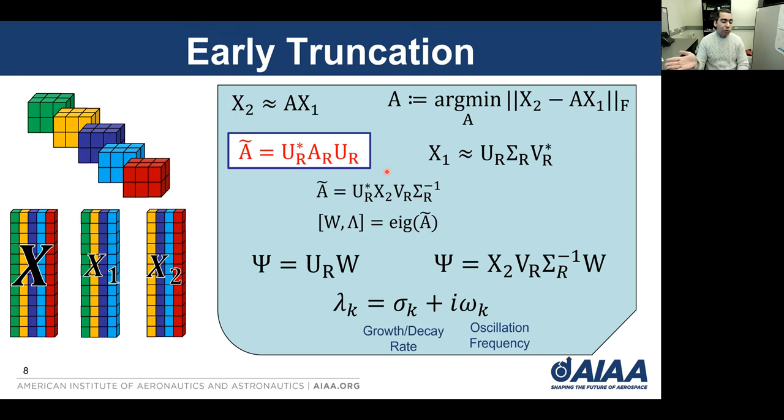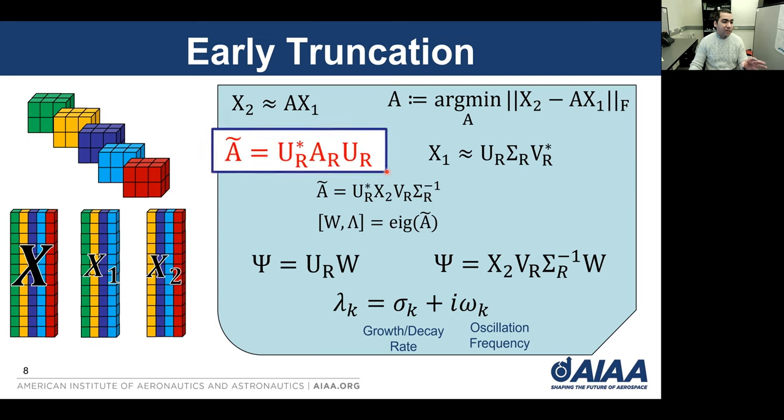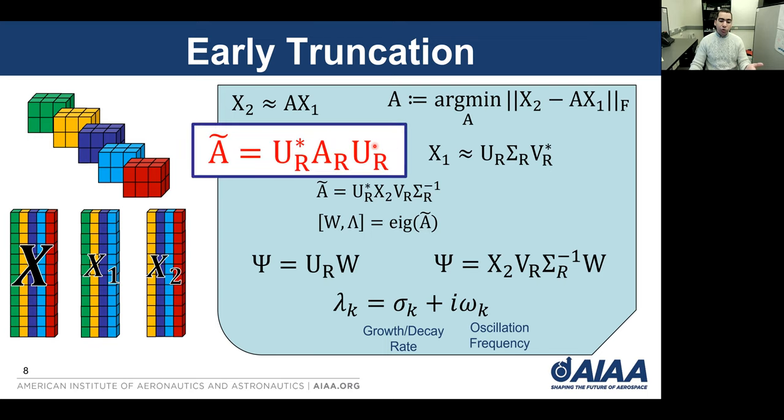One way to move around this issue is to do the truncation when we do the projection here at this step. So we do some early truncation. For example, if we are interested in getting 10 DMD modes, we project A on the first 10 columns of U.